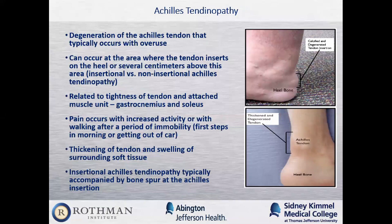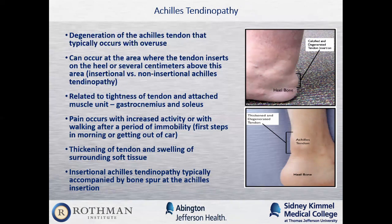Achilles tendinopathy occurs when there's degeneration of the Achilles tendon, often with overuse. There are two areas where this can manifest: right at the insertion on the calcaneus, or several centimeters above — referred to as insertional or non-insertional Achilles tendinopathy. This is thought to be related to tightness of the tendon and the gastrocnemius and soleus muscles. Patients have pain with increased activity or after immobility. Insertional Achilles tendinopathy is typically accompanied by a bone spur at the insertion, which can be part of the pain-producing cause.